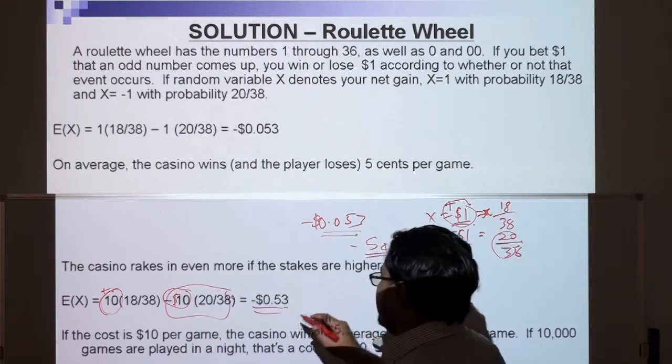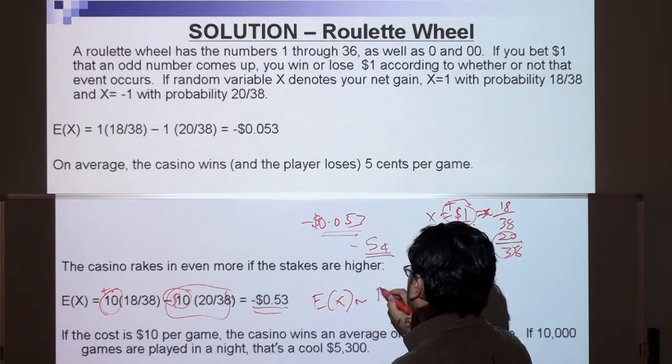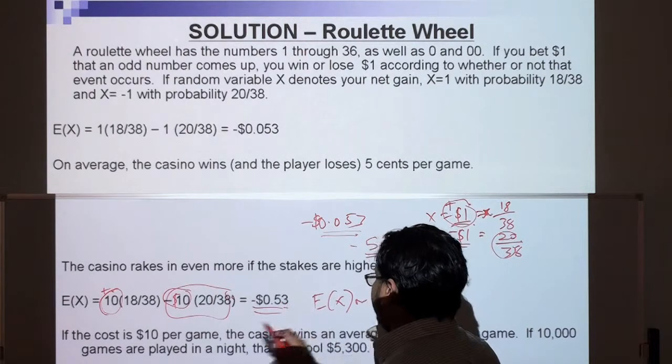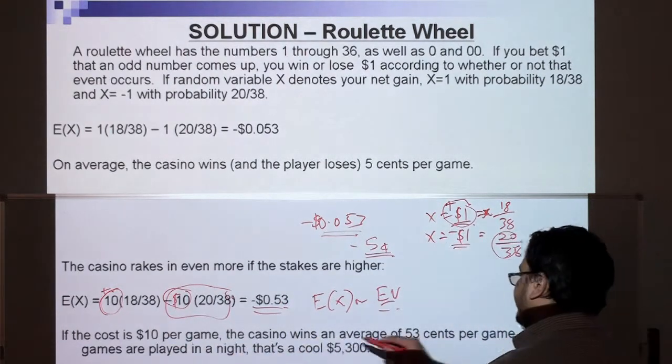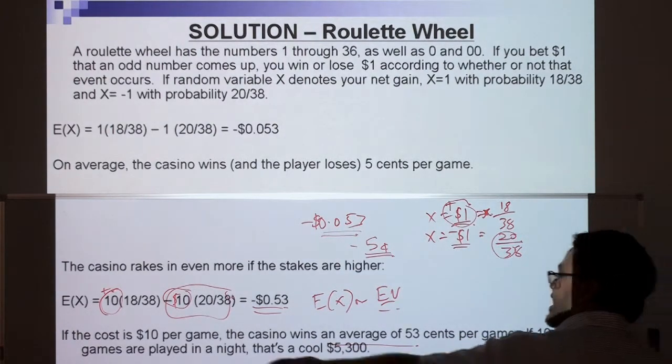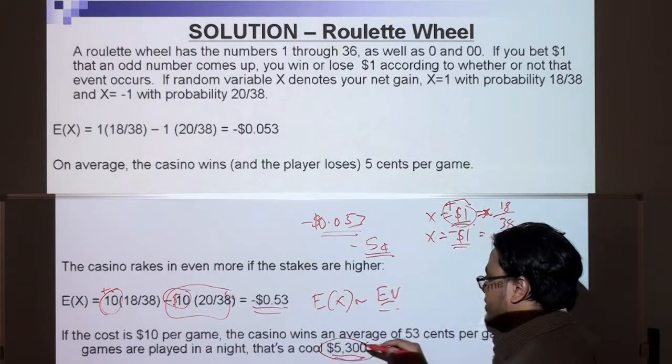So most likely the expected value, E(X) or EV, is you lose 50 cents. If the game is $10 per game, the casino wins on average 53 cents per game, and if 10,000 games are played in a night, that's $5,300 for the casino to win.